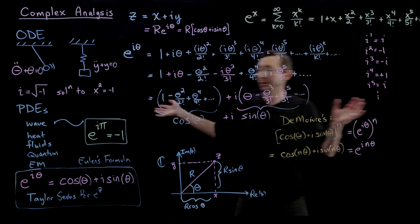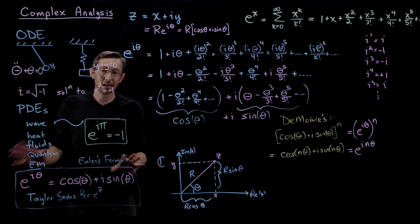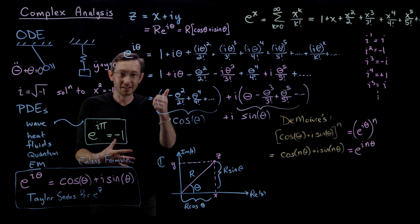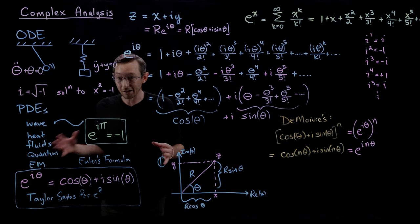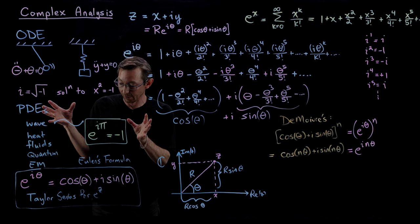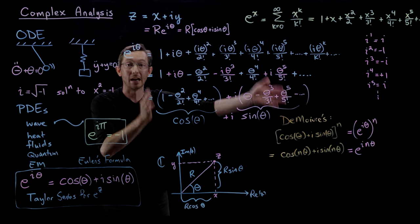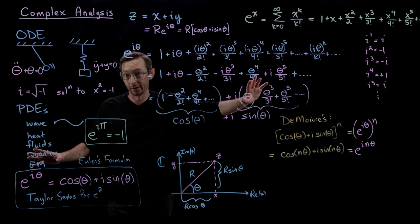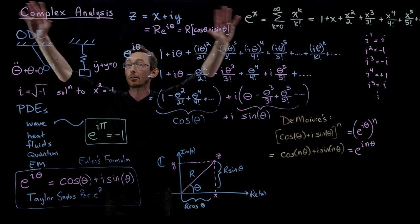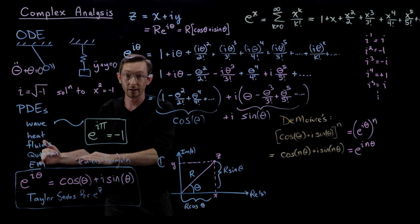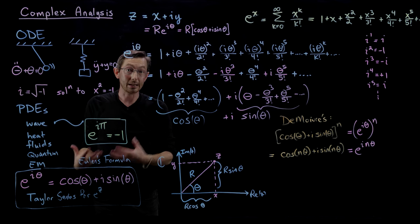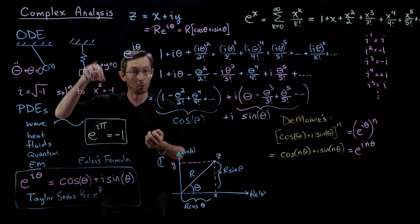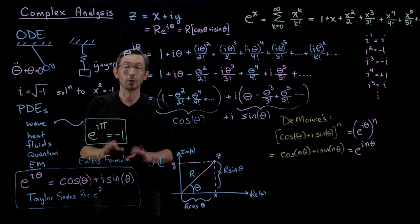We're going to use this everywhere. Euler's formula is one of those things — if someone shakes you awake at two in the morning on a desert island, you should be able to not only write down Euler's formula but derive it from scratch in the sand. This is cornerstone mathematics, and we're going to use it all the time when thinking about complex functions and solutions of ODEs and PDEs involving anything oscillatory, like a guitar string, a pendulum, or a mass on a spring.